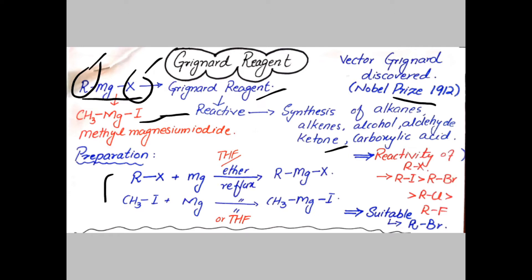How is the Grignard reagent prepared? Alkyl halide can be reacted with magnesium in the presence of ether under reflux to obtain alkyl magnesium halide.